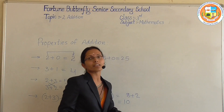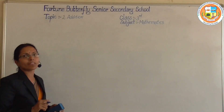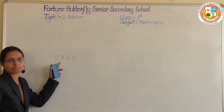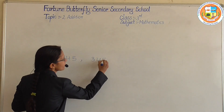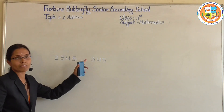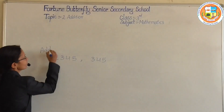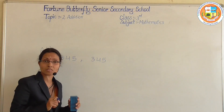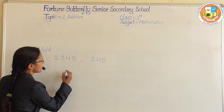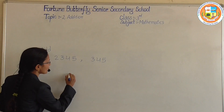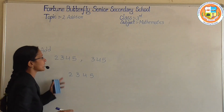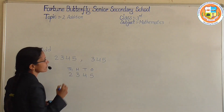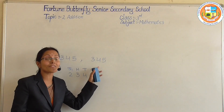Next I am going to explain examples for addition. I am giving 2 numbers of different place values: 2345, which is a 4-digit number, and 345, which is a 3-digit number. To add these numbers, we first write them in columns by place value — ones, tens, hundreds, and thousands. We write the plus sign and then proceed.